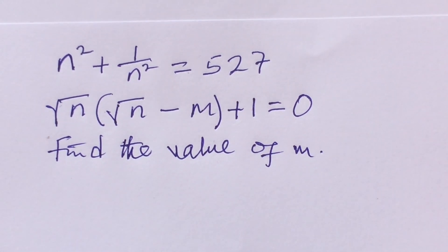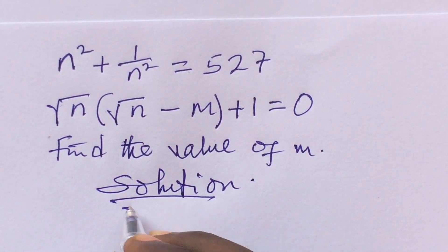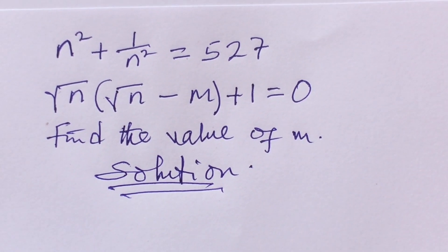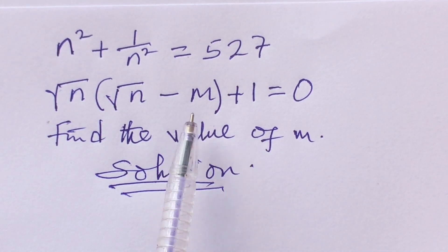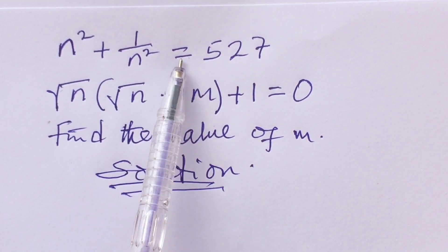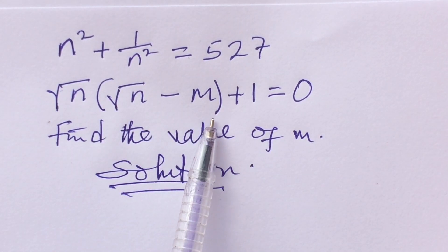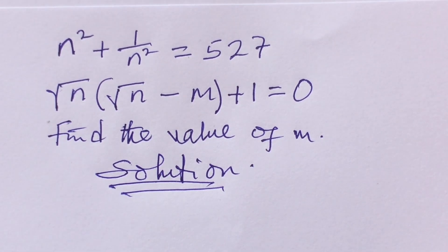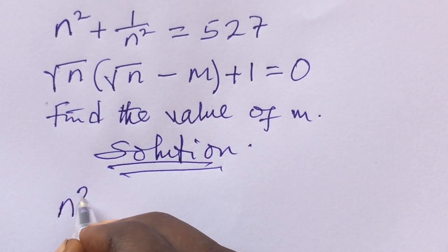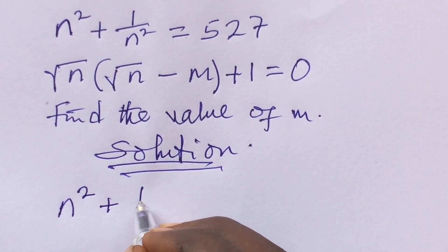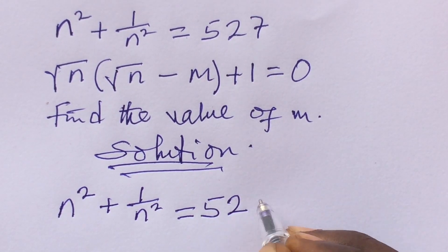Let's put our solution down. Now if you look at these two equations, we are asked to find m. To do that, we work with the first equation and make it look like the second equation, then draw a comparison. So the first equation is: n² + 1 all over n² = 527.